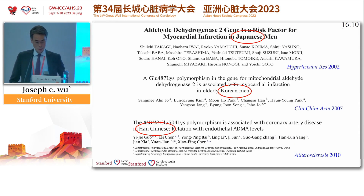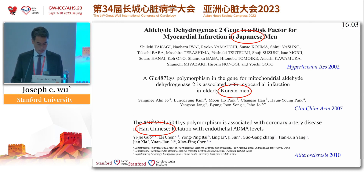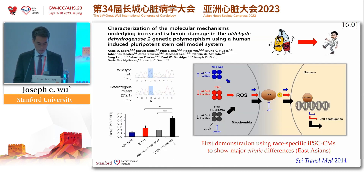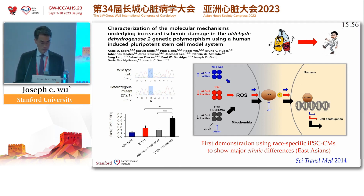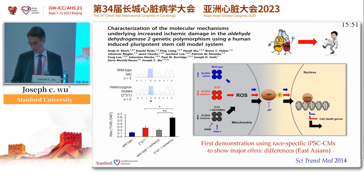And so this is no joke — these are epidemiology studies observed in Japanese men, Korean men, and also Han Chinese, including myself. About 10 years ago, one of my former postdocs who's now a faculty in Germany, Antje Eber, decided to look at what is the impact of this genetic variant on myocardial infarction, and how do you model that?